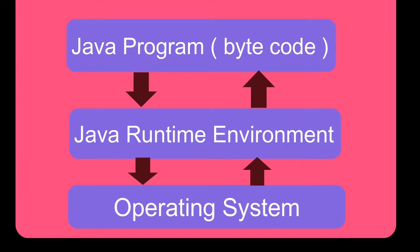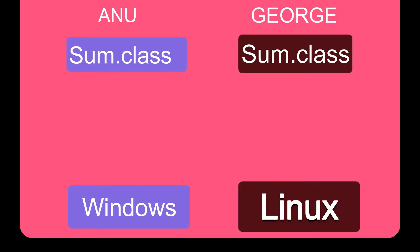Class files, SumCode class, classified. You can get the data of JRE, and JRE will give you the data on the operating system. SumCode class — you can get the data of JRE. No Java is used.